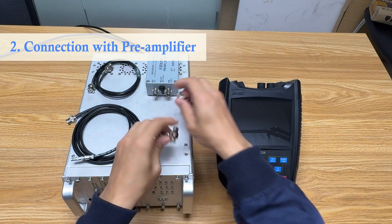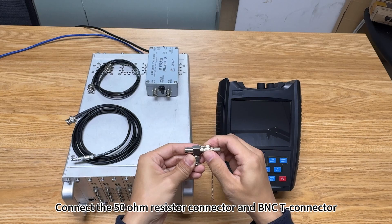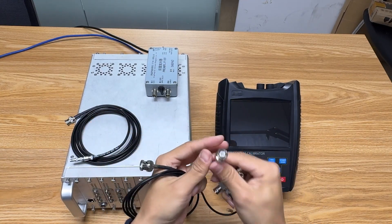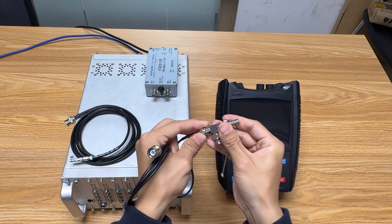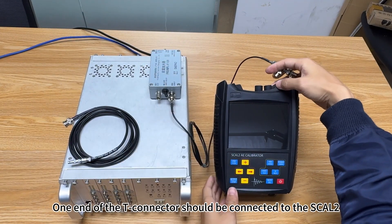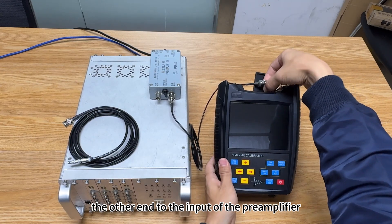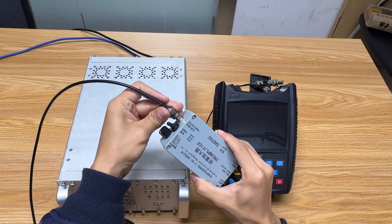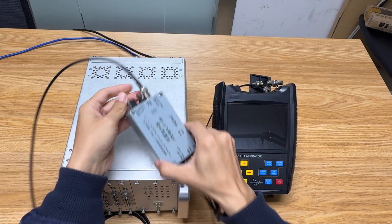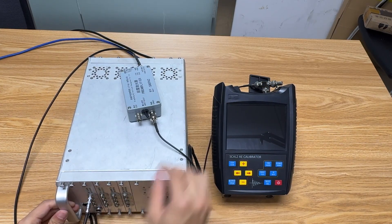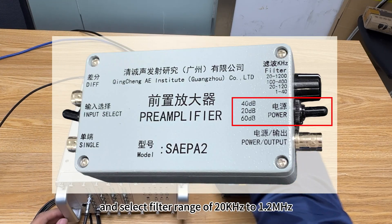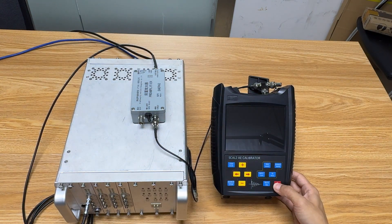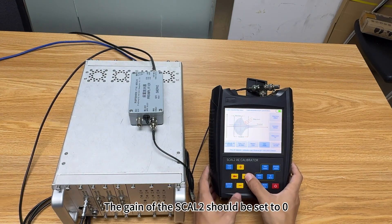Connection with pre-amplifier. Connect the 50 ohm resistor connector and BNC-T connector. One end of the T connector should be connected to the SCAL-2, the other end to the input of the pre-amplifier. And the output of the pre-amplifier should be connected to the AE instrument. Set the amplifier gain to 40 dB and select filter range of 20 kHz to 1.2 MHz. The gain of the SCAL-2 should be set to zero.